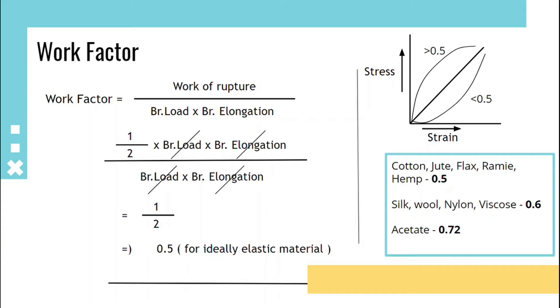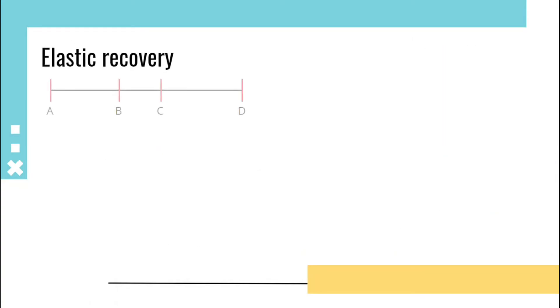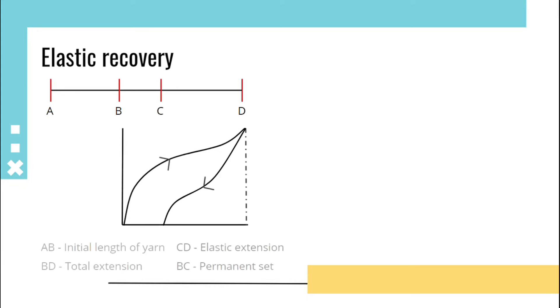For elastic recovery, consider AB to be the initial length of the yarn. It is extended to BD, and the recovery is from D to C. BC is the permanent set. Elastic recovery can be written as the ratio of CD by BD.